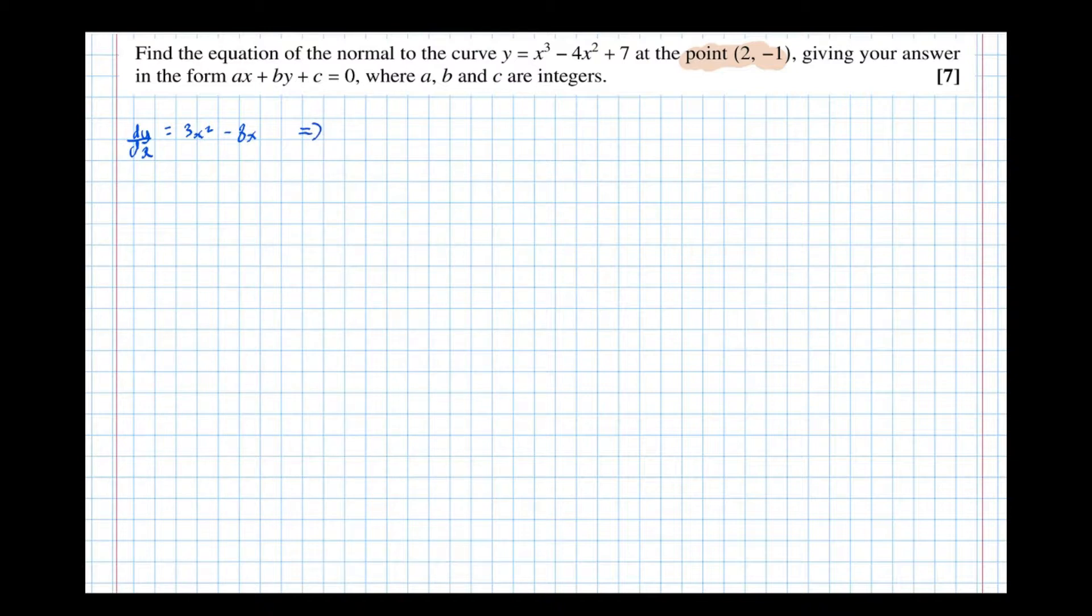So that means at x = 2, the gradient of the curve equals 3 lots of 2 squared minus 8 lots of 2, which is equal to, so we'll put this in the calculator.